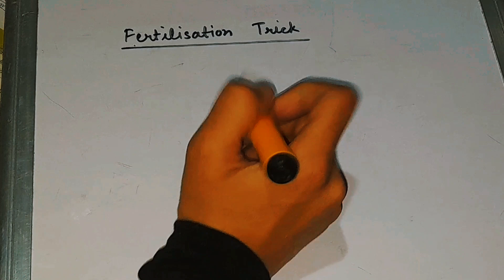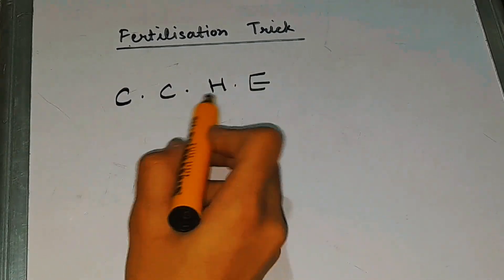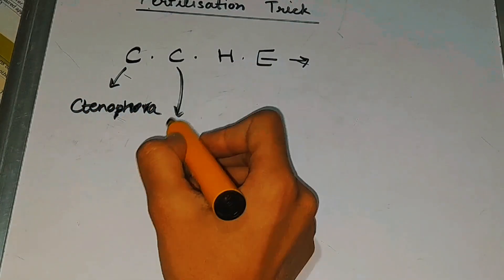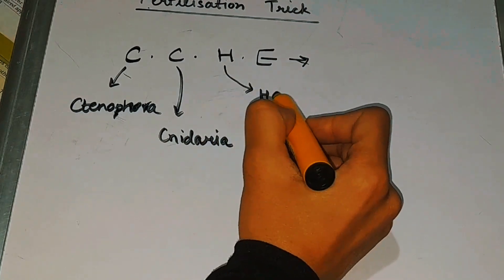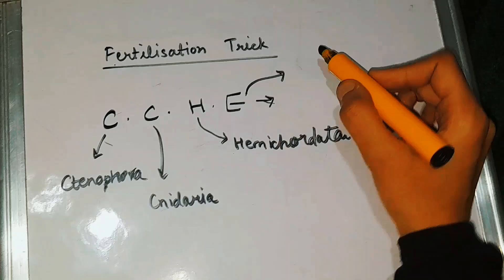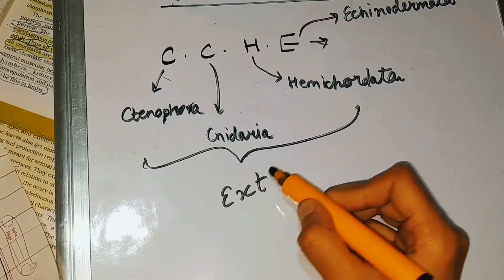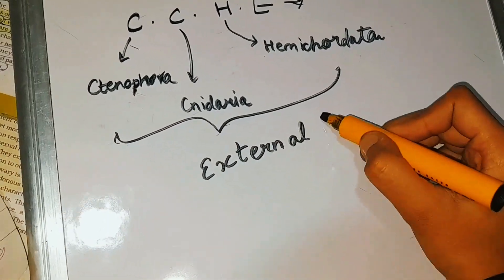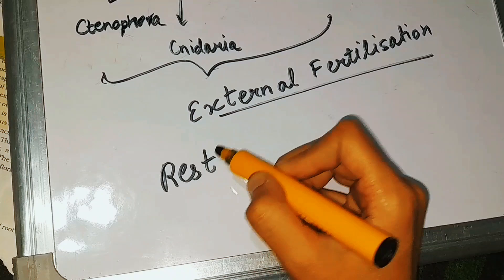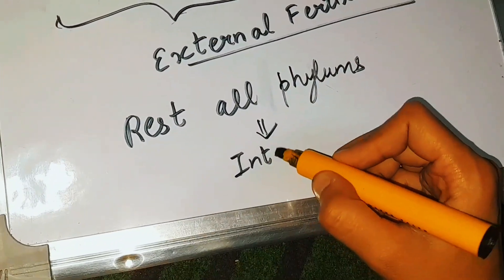There is one topic left — fertilization. I have a trick for that: CCCHE. These are four phylums — Tenophora, Nideria, H for Hemicordata, and E for Echinodermata. These four phylums will have external fertilization present in them. All the other phylums apart from these four will have internal fertilization present in them.